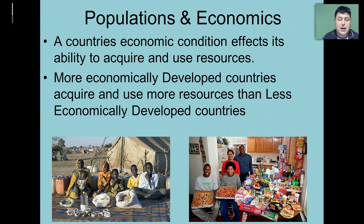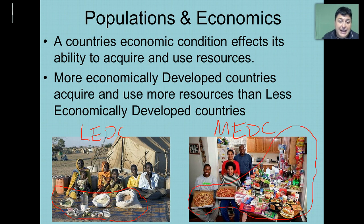If we look at the pictures on this slide, on the left we have a less economically developed country and on the right we have a more economically developed country. In front of them represents the food that they will consume in a week's time. Notice that the more economically developed country has a lot more available food, and the kinds of food are resource intensive — from the plastics and the packaging to the actual food itself. In order to produce meat, for example, it takes a lot of resources.